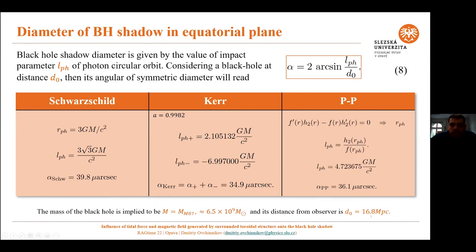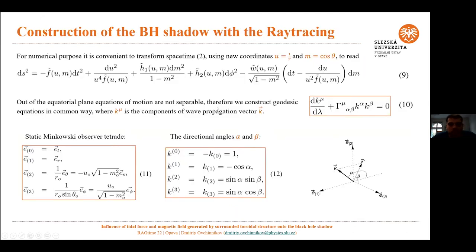We consider parameters for a black hole with mass equal to that of the central black hole in galaxy M87, and D0 is equal to the distance to this black hole. We obtain results for three different cases of Preston-Poisson parameters, and it is possible to notice that for some choice of parameters it is possible to get a diameter of the black hole shadow that lies between the corresponding Schwarzschild and Kerr values.